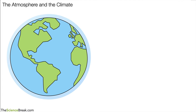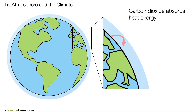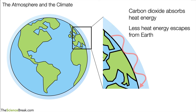So what problem does that cause? What does it matter if the levels of carbon dioxide in the atmosphere are increasing? Well, carbon dioxide has the property of absorbing heat energy — it's good at absorbing heat energy. Heat energy that's radiated off the surface tends to get trapped in the atmosphere because the carbon dioxide absorbs it. That means less of the energy escapes from Earth into space, and this can lead to a warming of the atmosphere and climate change.